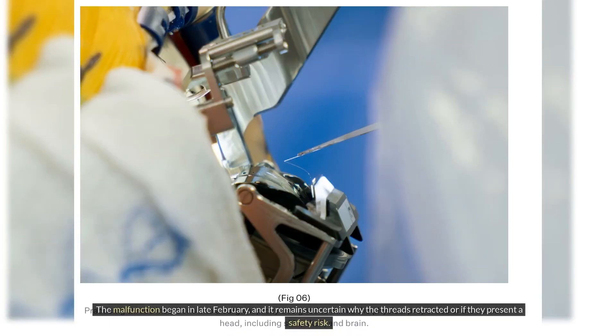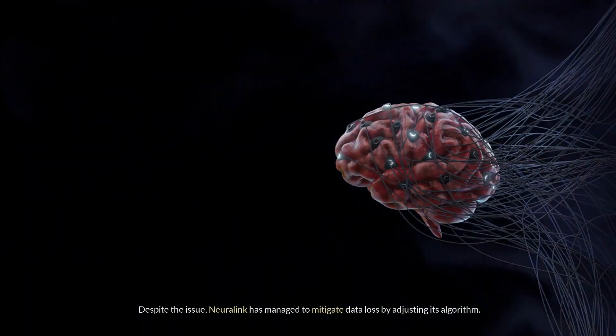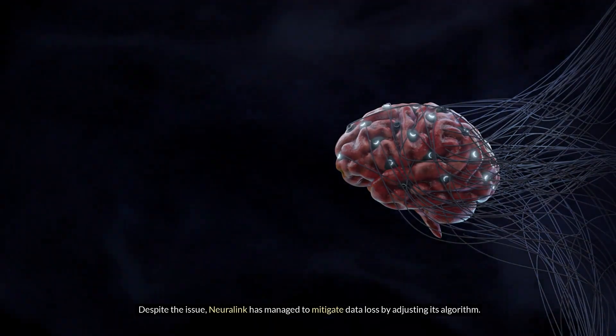The malfunction began in late February, and it remains uncertain why the threads retracted or if they present a safety risk. Despite the issue, Neuralink has managed to mitigate data loss by adjusting its algorithm.